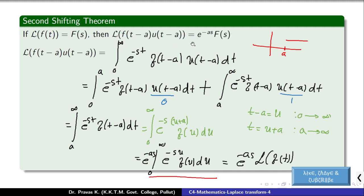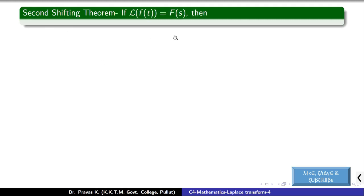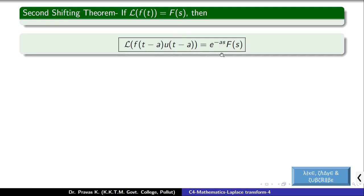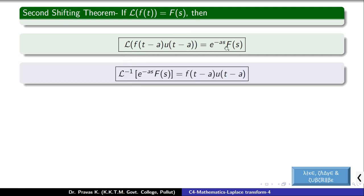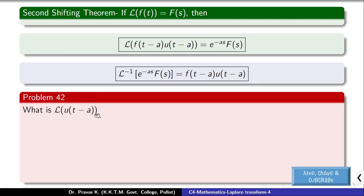So the second shifting theorem states: L of f(t-a) into u(t-a) equals e raised to minus as into F(s). Conversely, the inverse Laplace transform: L inverse of e raised to minus as into F(s) equals f(t-a) into u(t-a).